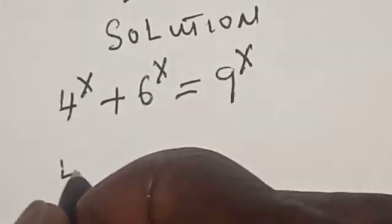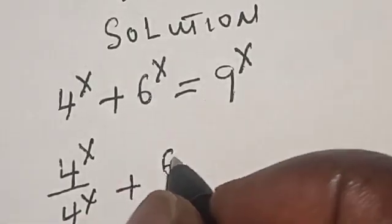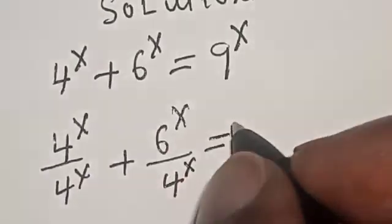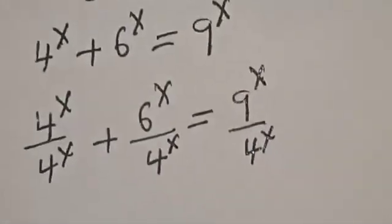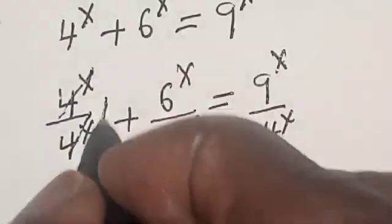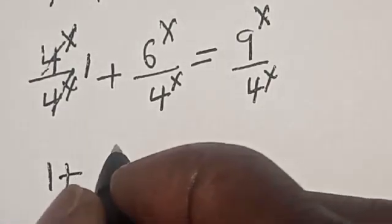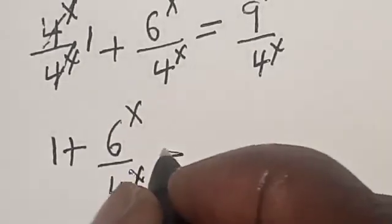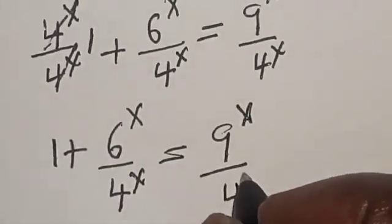Let's divide all through by 4 raised to power s. So 4 raised to power s divided by 4 raised to power s, plus 6 raised to power s divided by 4 raised to power s, is equal to 9 raised to power s divided by 4 raised to power s. This gives us 1 plus 6 raised to power s divided by 4 raised to power s is equal to 9 raised to power s divided by 4 raised to power s.